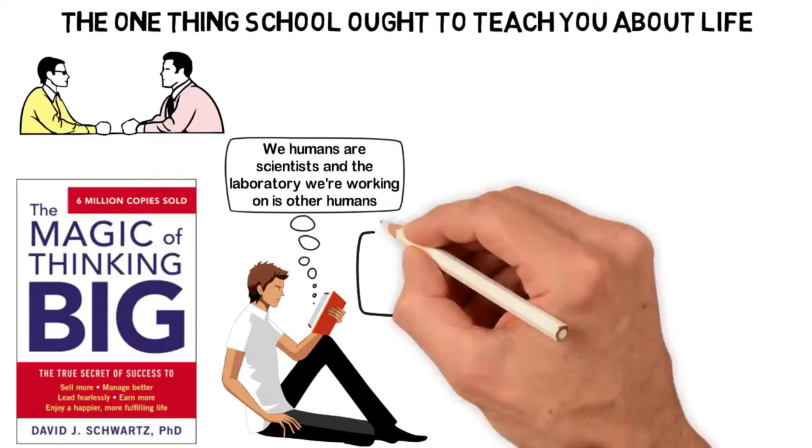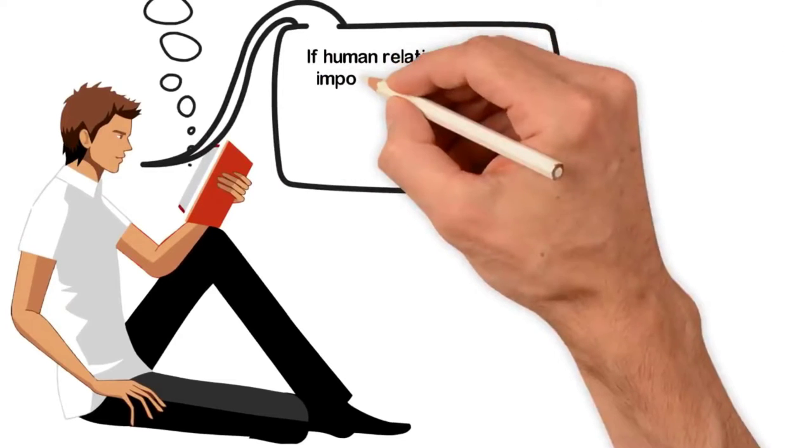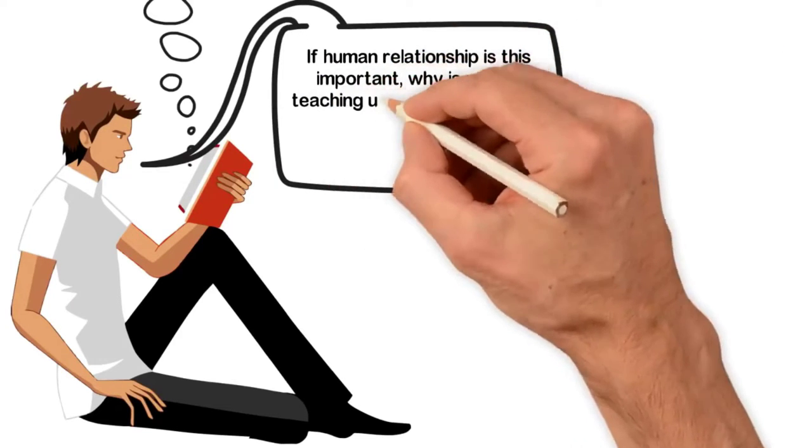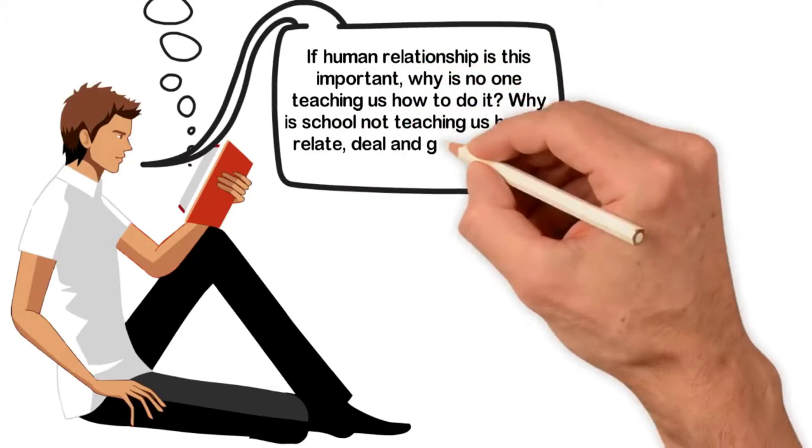I stopped reading the book and angrily asked myself: If human relationship is this important, why is no one teaching us how to do it? Why are the schools not teaching us how to relate, deal and get along with others?